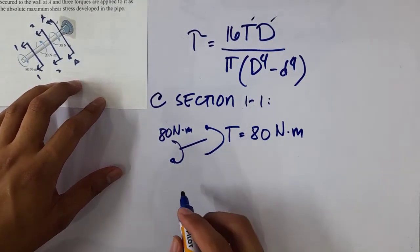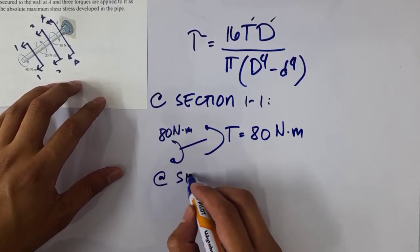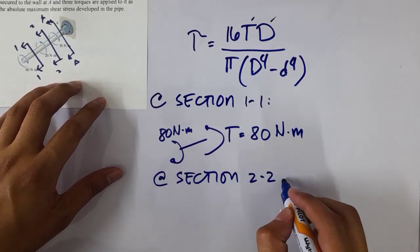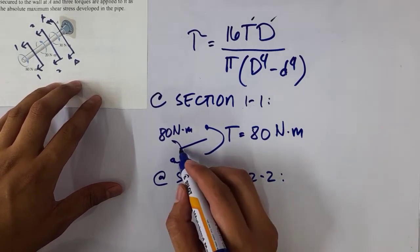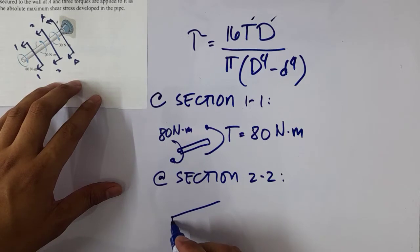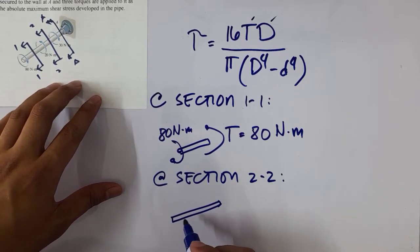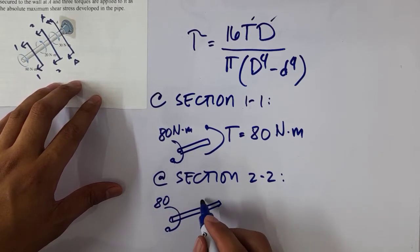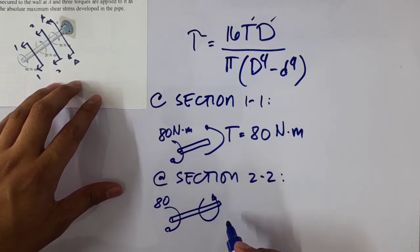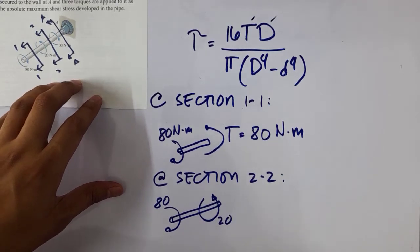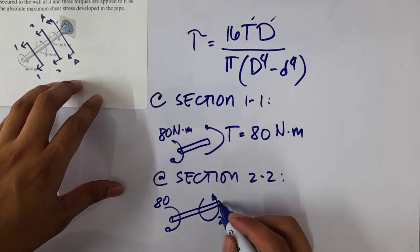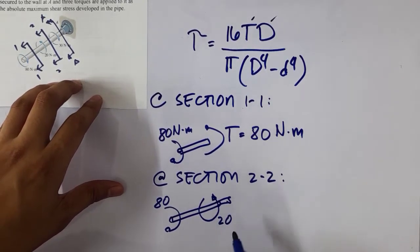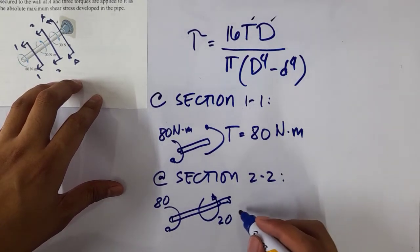At section 2-2, we will have this shaft. You will have an 80 newton meter, and another one in the opposite direction. Then you have the internal moment, which is in this direction.